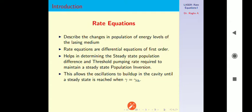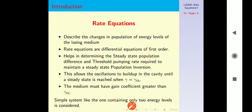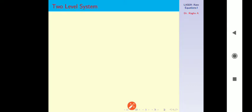We have derived an expression for threshold population inversion in the previous lecture. The medium will start lasing once the gain coefficient is greater than gamma TH. In this particular lecture we are going to consider a simple system containing only 2 energy levels. So, 2-level means there are only 2 energy levels. Let their energy levels be E1 and E2 having the populations N1 and N2.